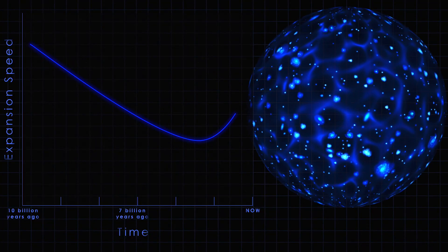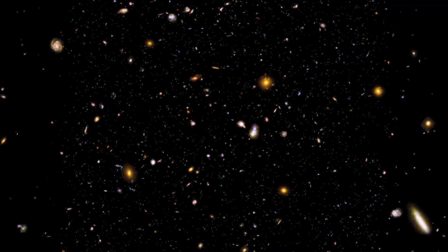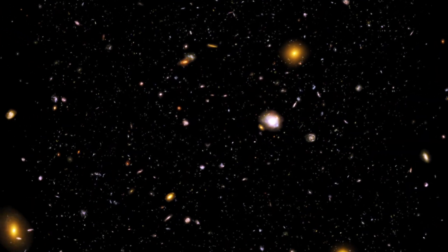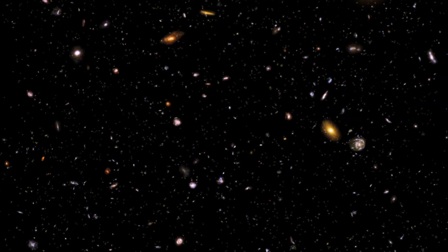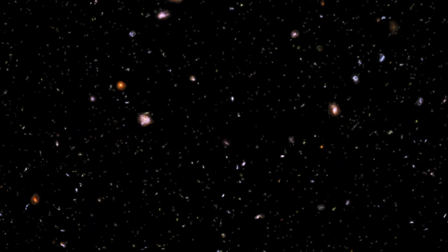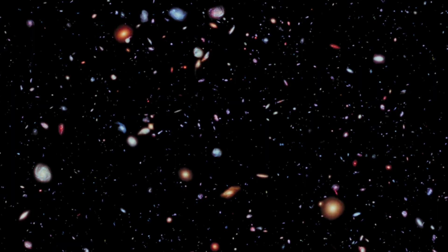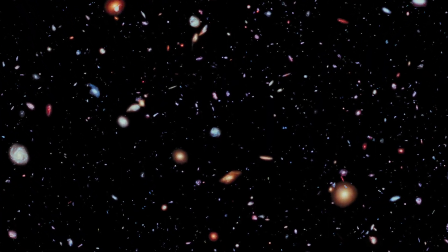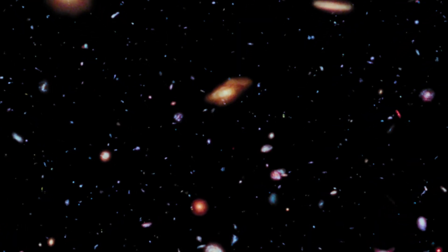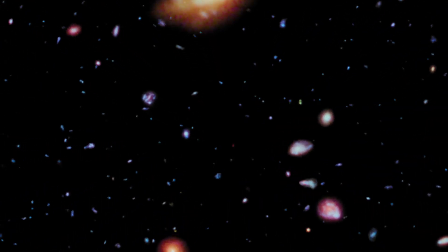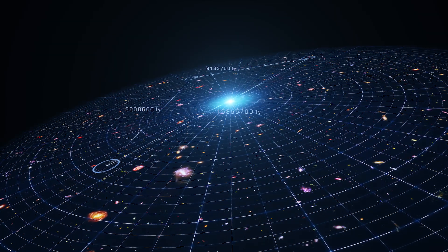Hubble found that the expansion rate of the universe is speeding up — it's accelerating due to a new component of the universe that we call dark energy. Dark energy actually reverses the sign of gravity; it gives rise to a repulsive gravity, which sounds very strange and is not something that Isaac Newton would have understood, but it is a feature in Einstein's theory of general relativity — Einstein's theory of gravity — that replaced Newton's theory. In that theory, if you have constant energy in empty space, that's unavoidable, and it will give rise to this repulsive gravity. Because gravity is weakest in the empty regions of space between galaxies, dark energy has its most pronounced effect in deep space, driving and pushing the universe to expand faster and faster.